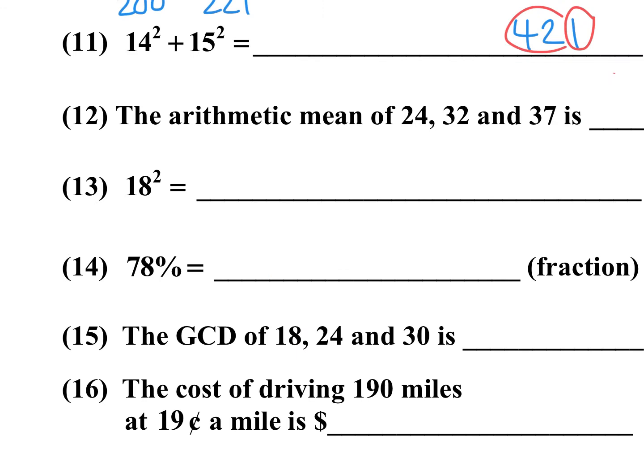Number 12: the arithmetic mean — the average of 24, 32, and 37. The answer looks like it's in the 30s, so I'll pick a base of 30. 24 is 6 short, 32 is plus 2, 37 is plus 7. Average those offsets: 7 plus 2 is 9, minus 6 is 3, divided by 3 is 1. Add 1 to the base of 30 — the average is 31.